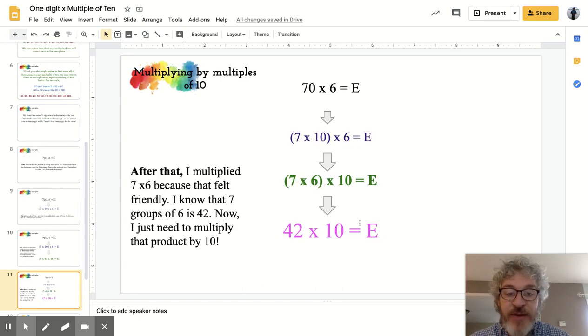I multiply 7 times 6, because I know that was a math-friendly number. That told me I had 7 groups of 6, which I know is 42. Now all I have to do is multiply 42 times 10. So I know that my answer for the number of eggs is going to be 10 times greater than 42.